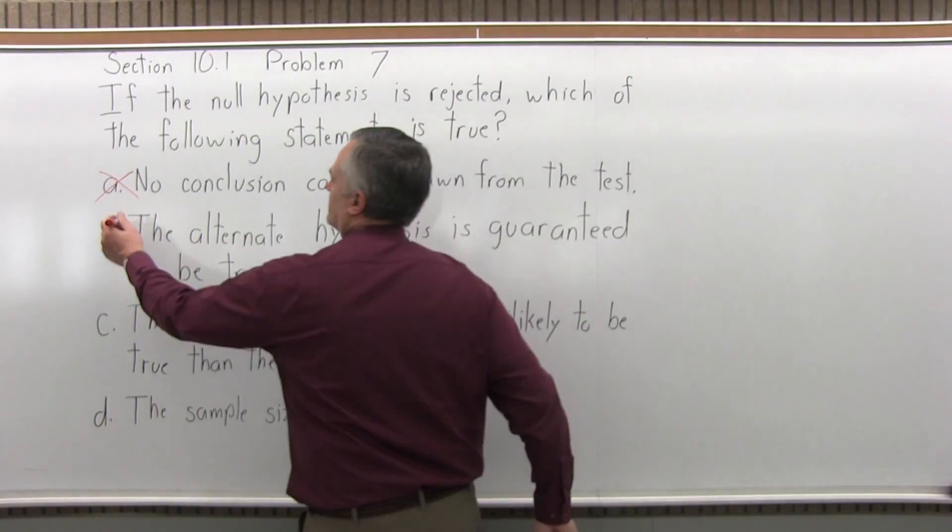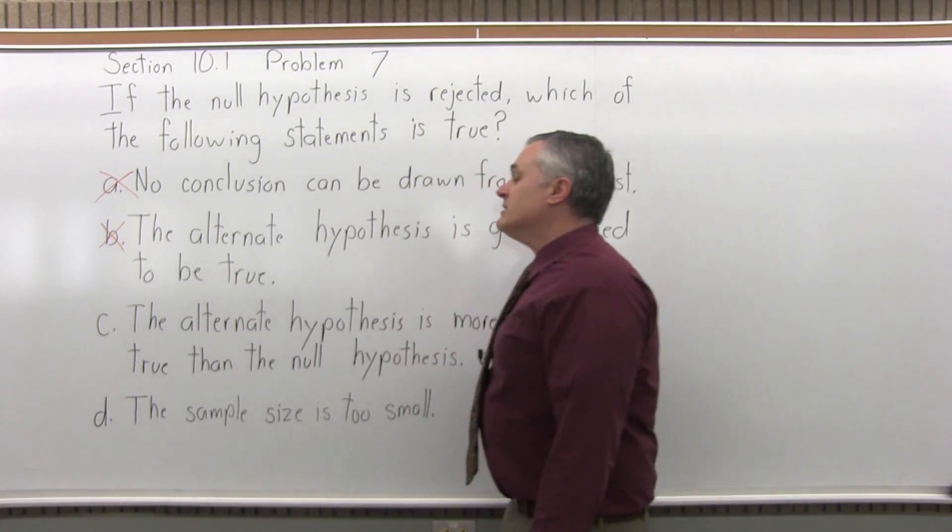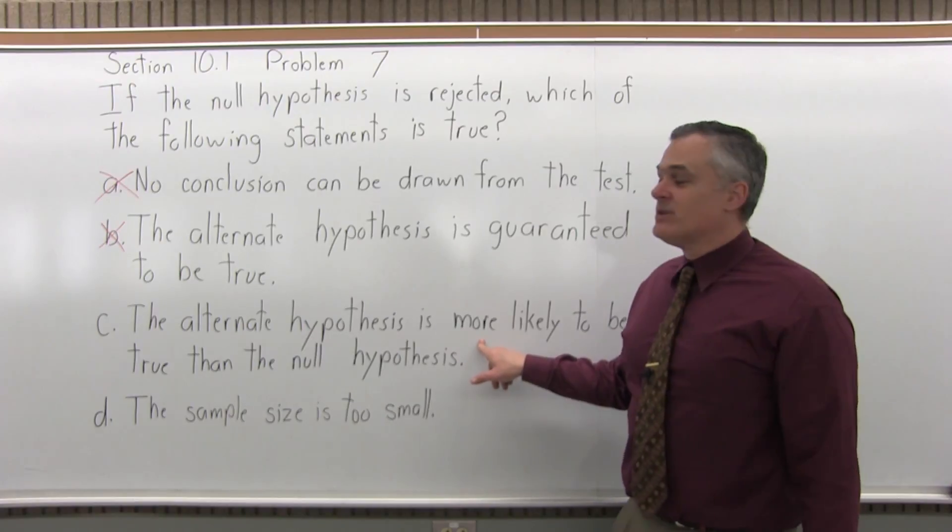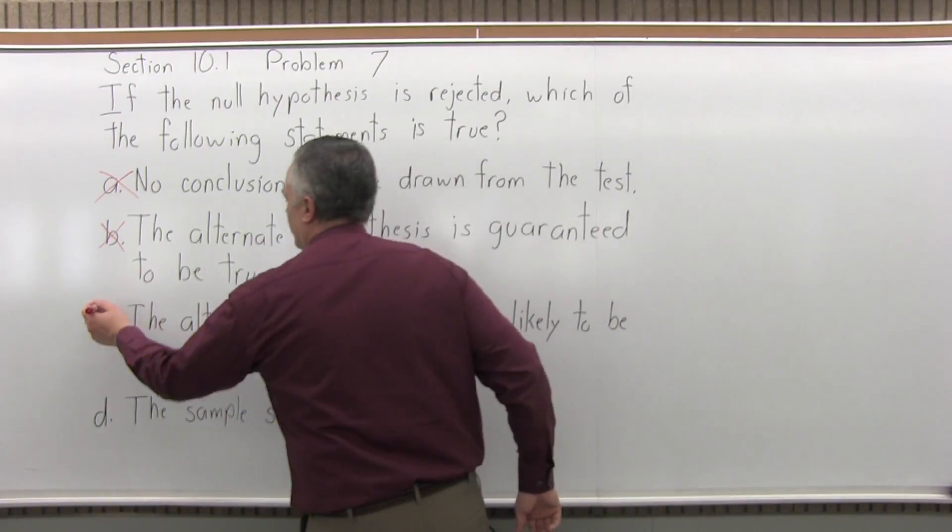The word here, guarantee, just throws this out. C, the alternate hypothesis is more likely to be true than the null hypothesis. This is the one, this is correct.